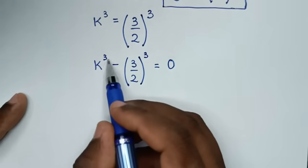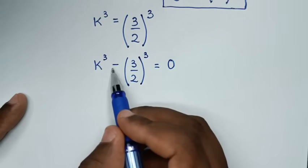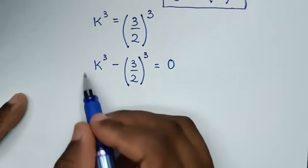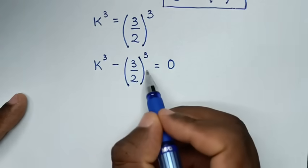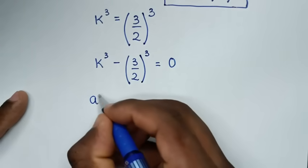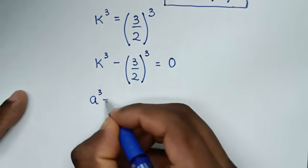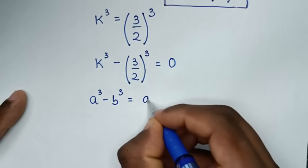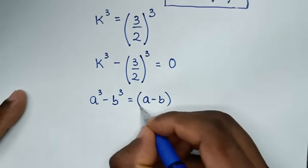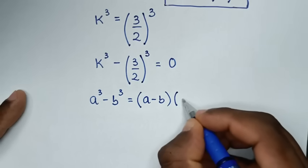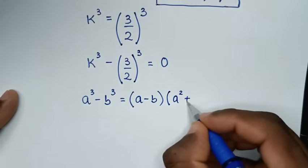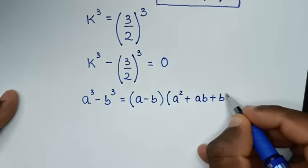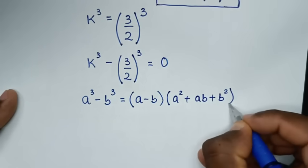We have a difference of cubes — difference of powers of 3. So we will apply the rule: a power 3 minus b power 3 is equal to (a minus b) bracket times (a squared plus a times b plus b squared).